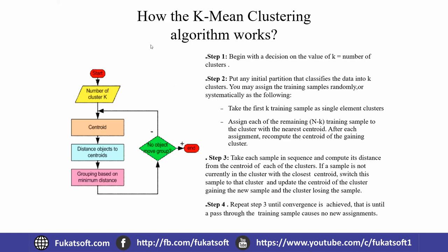Whichever centroid a data point is closest to, that data point comes into that cluster's set — grouping is based on minimum distance.